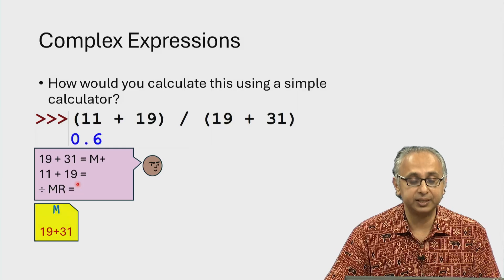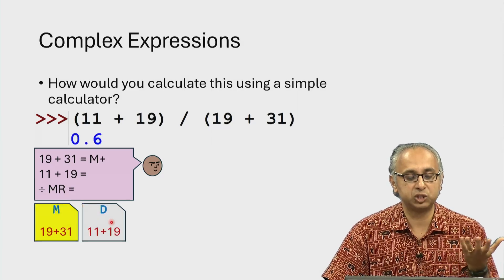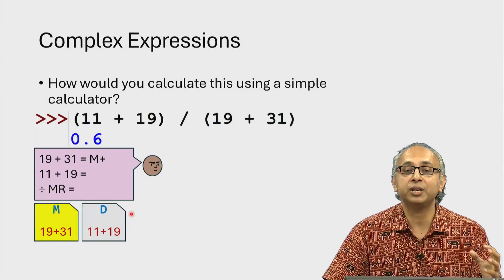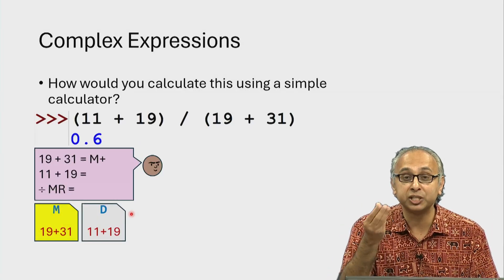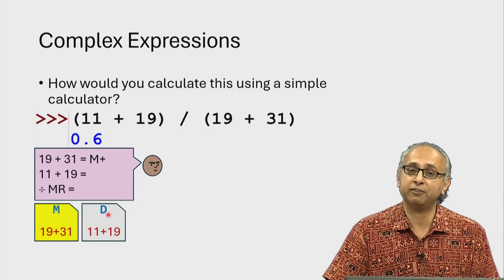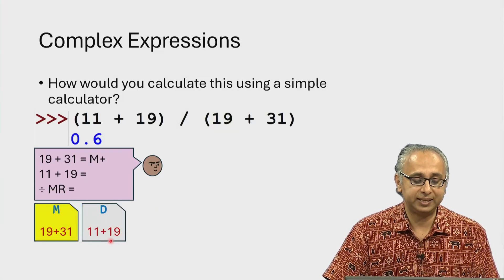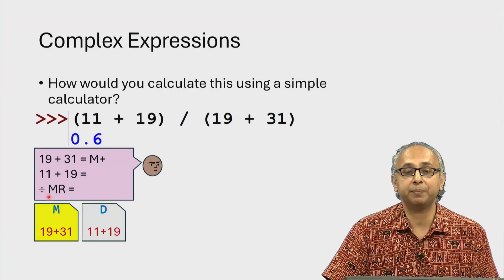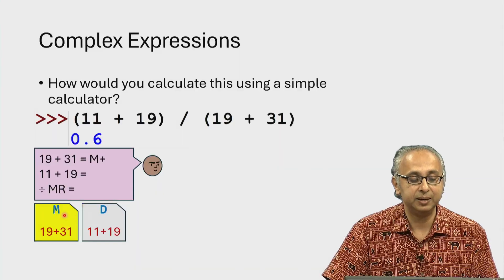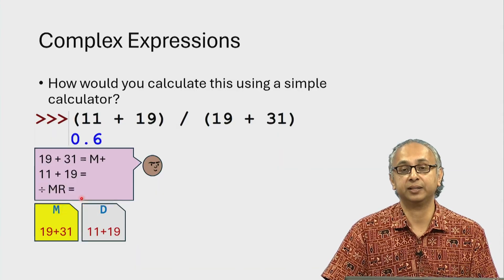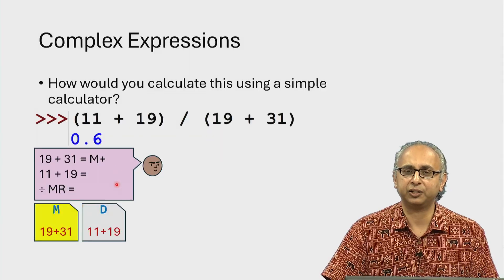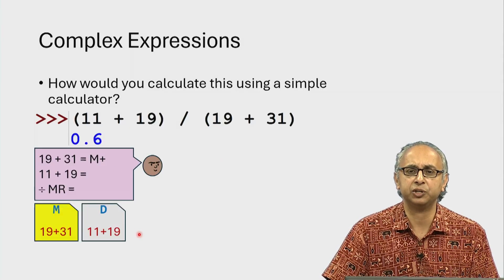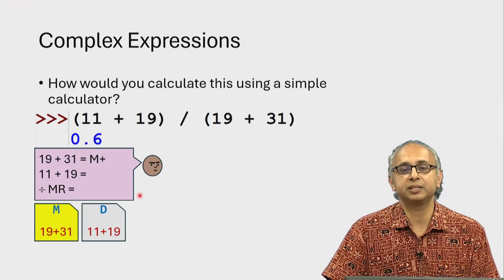Then they calculated this answer and remember this answer was displayed on the calculator. So in some sense conceptually there is some space in the calculator's memory for displaying the current value. Let's call that value D and that's where they calculated the numerator 11 plus 19. And finally by doing this step they divided D by M to produce the correct answer. Now if you are familiar with the calculator you would know how to do these kinds of complex calculations. In Python you can do something similar.